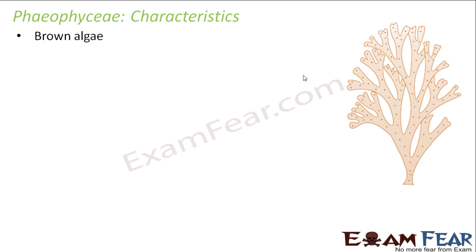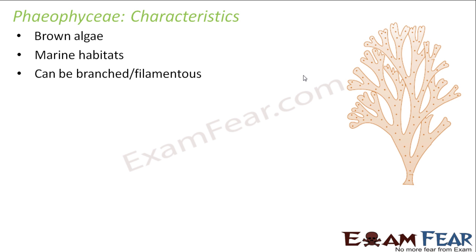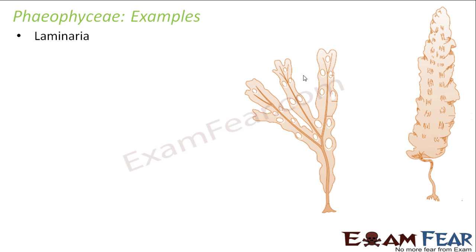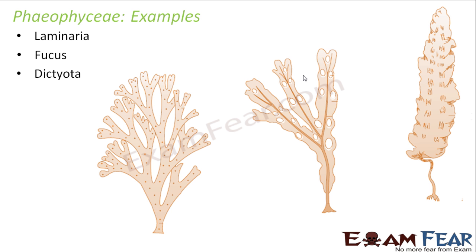Phaeophyceae are the brown algae. They are brown in color because of some specific pigment. Talking about habitats, they also prefer marine habitats. They can be branched or filamentous. Some examples of brown algae are Laminaria, Fucus, and Dictyota.